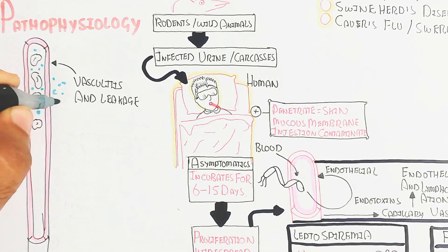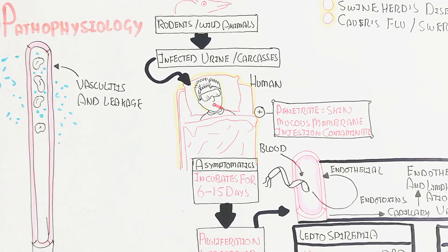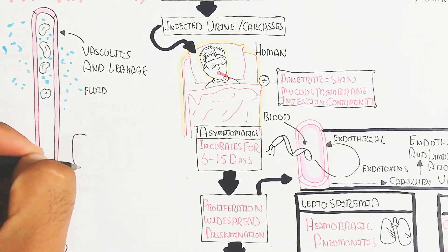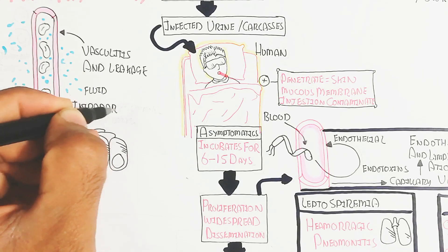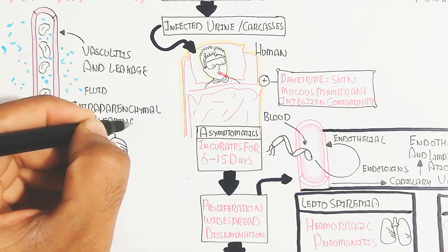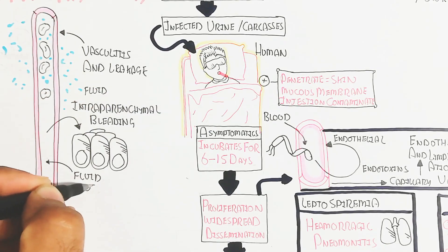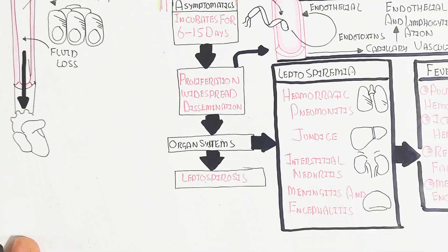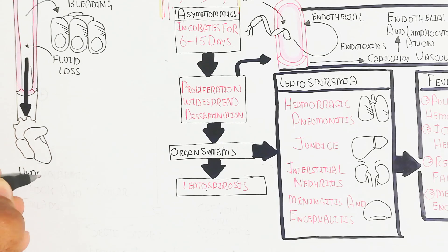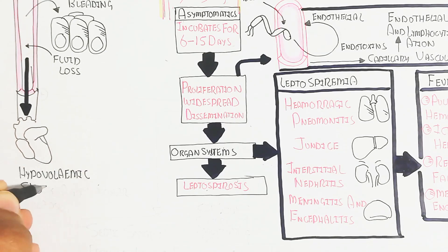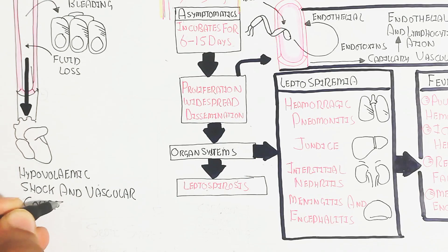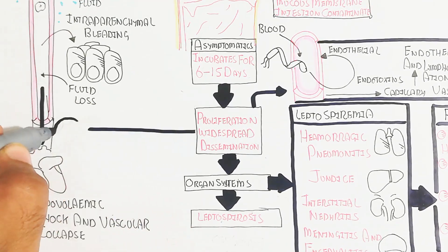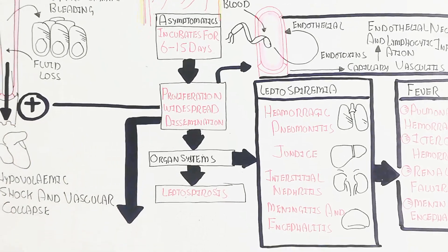Vasculitis and leakage of blood vessels lead to intra-parenchymal bleeding. Fluid moves into the tissue, and retention of fluid increases in the tissue. Within the blood circulatory system, fluid is lost, leading to hypovolemic shock and vascular collapse. The volume of fluid decreases, blood pressure drops, leading to heart attack and shock.